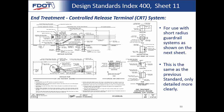This is for use with short radius guardrail systems shown on the next sheet. It's essentially the same as the previous standard, just detailed a little more clearly so it's easier to follow. The begin and end guardrail station is called out at post 1, corresponding to where you place that station in the plans. We also show at the centerline of the splice where the rest of the CRT guardrail system begins, as detailed on the next sheet.